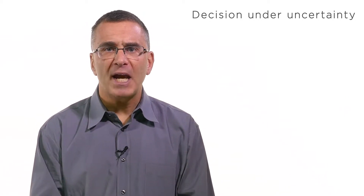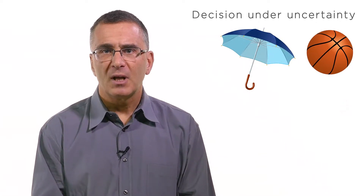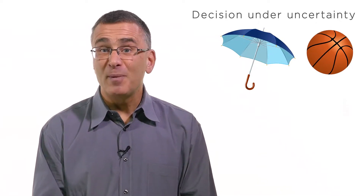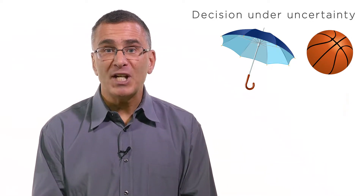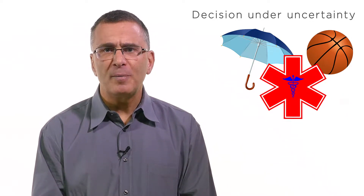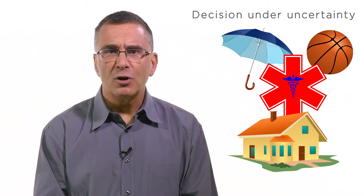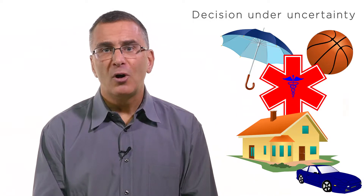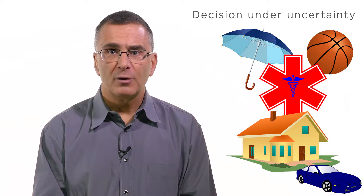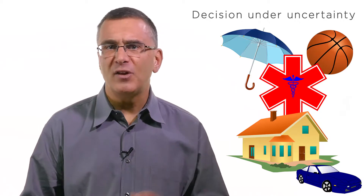You face a similar kind of uncertainty every time you decide whether to carry an umbrella or make a bet with a friend on a sporting event. And as you get to be my age, you'll find the uncertainties multiply. There's uncertainty about how much health and life insurance to buy, whether to buy a seven-year variable or 30-year fixed mortgage, or whether to buy an expensive car that will last a long time or a cheaper car that may break down sooner.